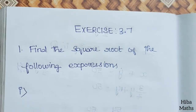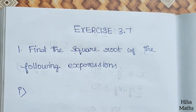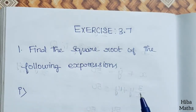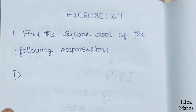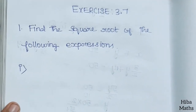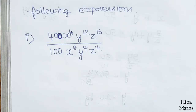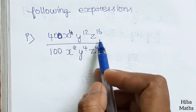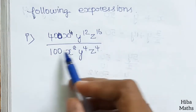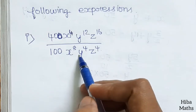Hello students, welcome to HIBA Max 10 Standard, exercise 3.7, first question: find the square root of the following. The first question is 400 x power 4, y power 12, z power 16 divided by 100 x power 8.